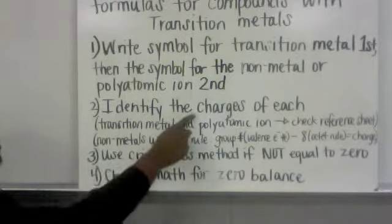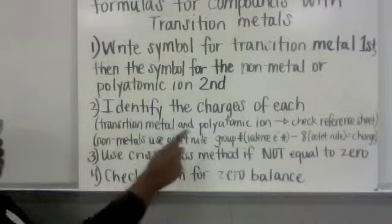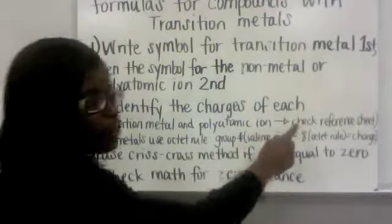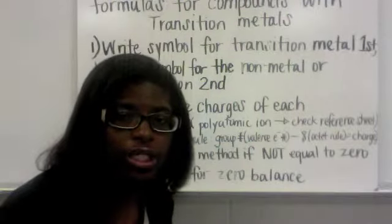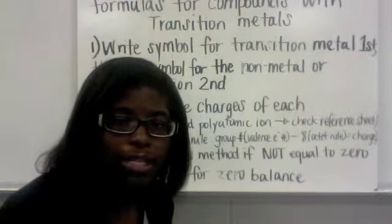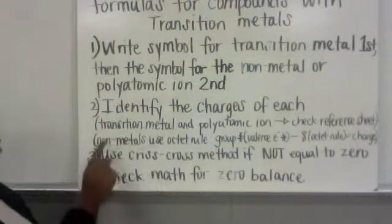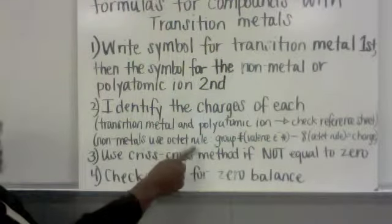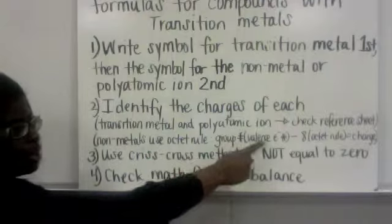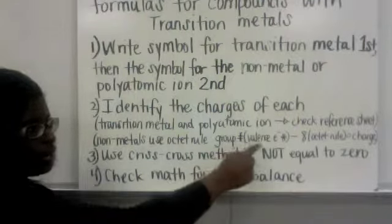Then you're going to identify the charges of each transition metal and polyatomic ion. For this you're going to have to check your reference sheet unless you already have that information memorized. For the non-metals you must use the octet rule. The group number and the valence electron number are the same thing.